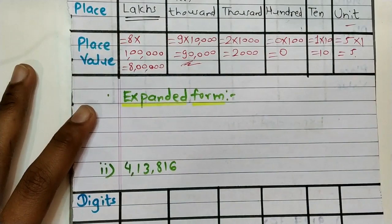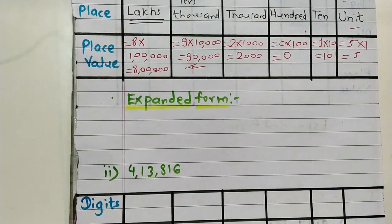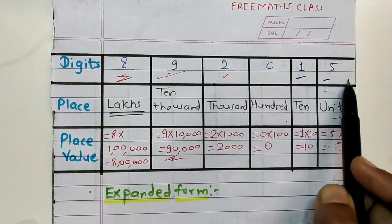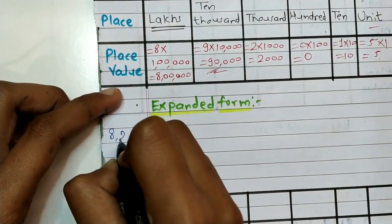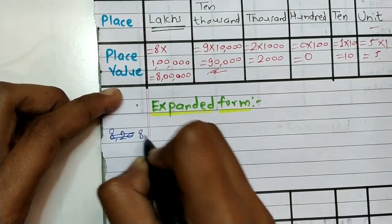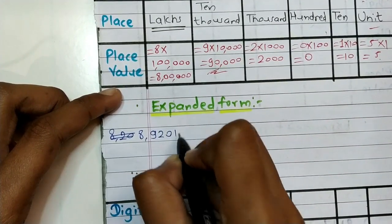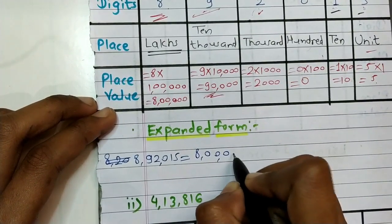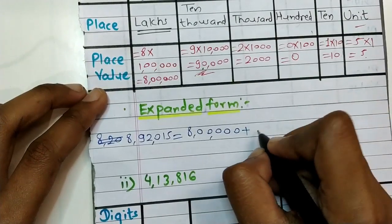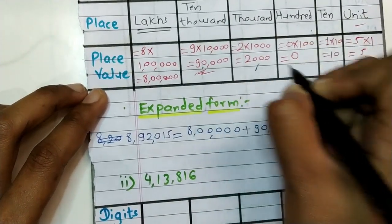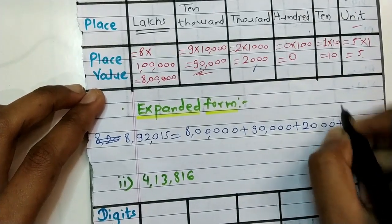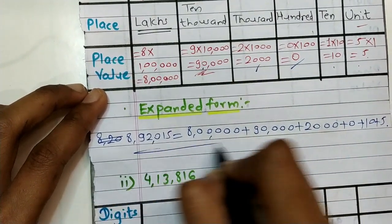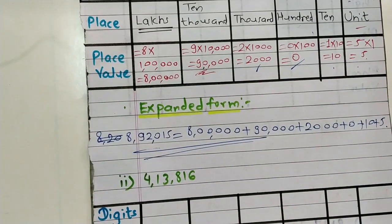Expanded form of 8,92,015: eight lakhs plus ninety thousand plus two thousand plus zero plus ten plus five. This is our required expanded form.